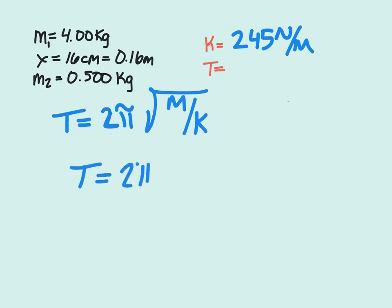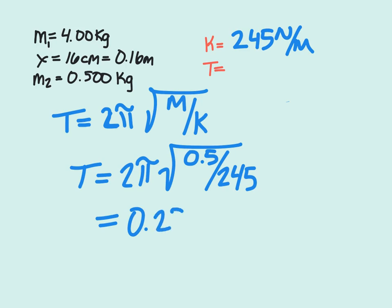We have 2π times the square root. Our new mass is 0.5 kilograms, and we have our spring constant of 245 newtons per meter. We end up with a period that equals 0.284 seconds.